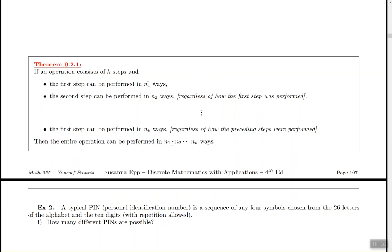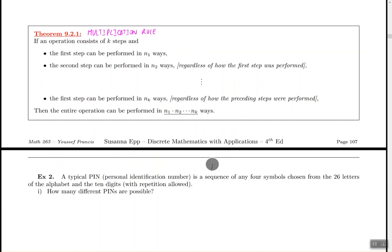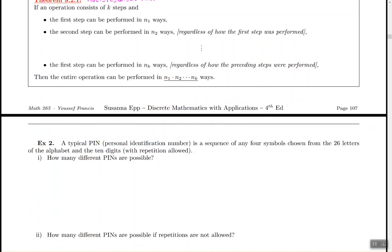This is going to be important. I would like you to take a minute here and try to memorize the formula. So let's talk about a simple application of this in example number two. It says a typical personal identification number is a sequence of any four symbols chosen from the 26 letters of the alphabet and the 10 digits in this problem.